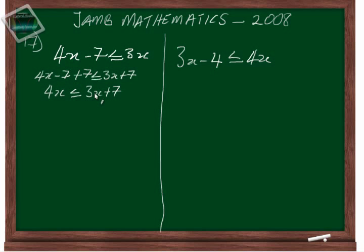So the next thing, we are going to nullify the 3x on this side so that all the x's will be on the same side. To nullify, we subtract 3x: 4x minus 3x less than or equal to 3x minus 3x plus 7. This cancels out, so x is less than or equal to 7.